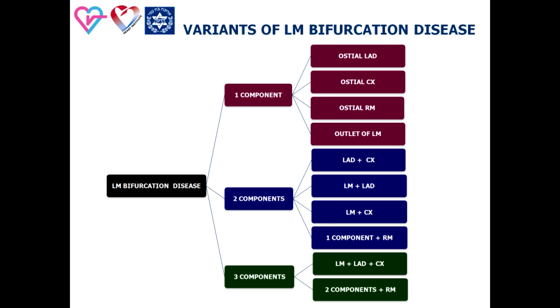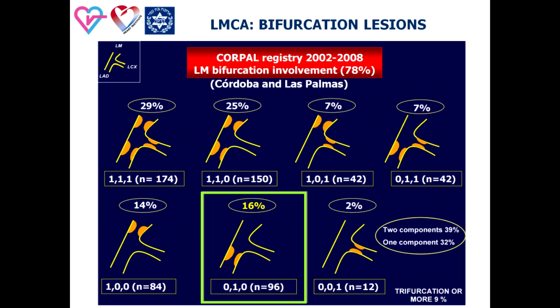This is a classification of distal left main coronary artery disease based on involvement of bifurcation components. According to a large angiographic registry, evidence of three components of bifurcation left main stenosis is documented in 29% of cases. Involvement of two components — LAD and left main, or ostio-LAD and ostio-circumflex — is seen in 39%, and one component — isolated ostio-LAD, ostio-circumflex, or very distal left main — in one third of cases. Evidence of significant ramus medianus and left main coronary artery involvement is documented in 10% of cases.